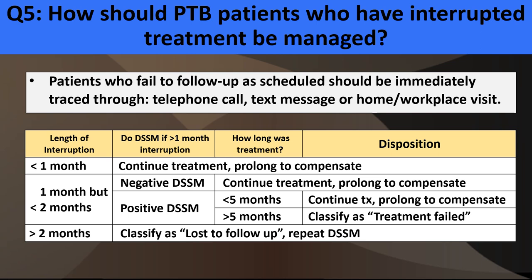How should PTB patients who have interrupted treatment be managed? Patients who fail to follow a schedule should be immediately traced by telephone call, text message, or home/workplace visit. If interruption is less than one month, continue treatment and prolong the regimen to compensate. Greater than one month but less than two months, test for smears — if smear negative, continue and prolong; if positive, less than five months, continue and prolong; greater than five months, classify as treatment failed. More than two months, classify as loss to follow-up and repeat smears.